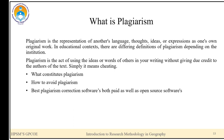Now let us understand what is plagiarism. Plagiarism is the representation of another's language, thoughts, ideas, or expressions as one's own original work. In simple words, plagiarism is nothing but copying text that is readily available on the internet or in books. In an educational context, there are different definitions depending on the institution. Plagiarism is the act of using the ideas or words of others in your writing without giving due credit to the author — simply put, it means cheating. We will also look at what constitutes plagiarism, how to avoid it, and the best plagiarism correction softwares, both paid and open source.